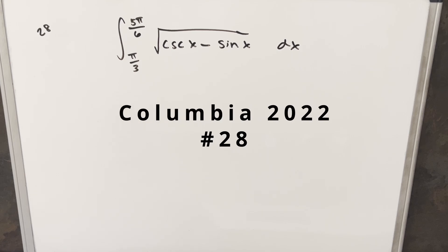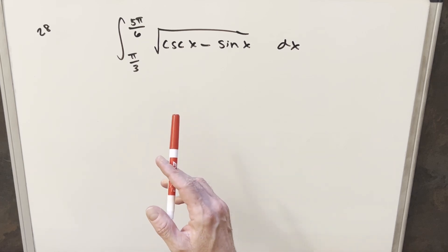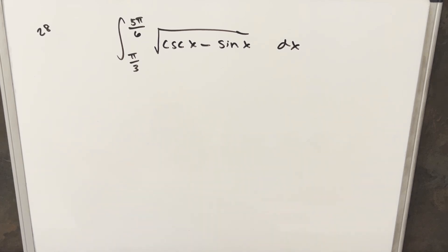We have here today an interesting integral from the Columbia Integration Bee 2022. This was problem number 28. We have the integral from π/3 to 5π/6 of the square root of cosecant x minus sine x dx. The interesting thing about this one is that I actually did the same problem on the MIT Integration Bee, but it was an indefinite integral.